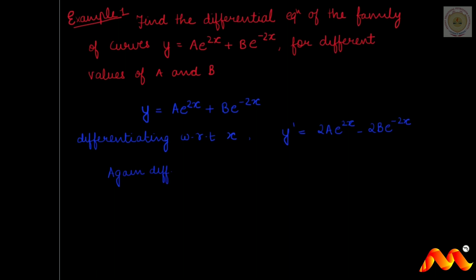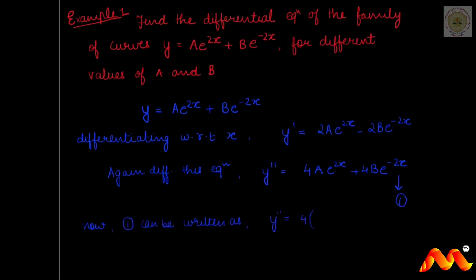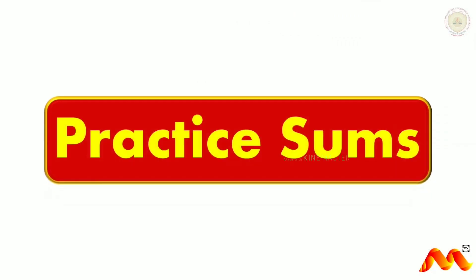Differentiating again with respect to x: y'' = 4a·e^(2x) + 4b·e^(−2x). This gives y'' = 4(a·e^(2x) + b·e^(−2x)). Comparing with equation 1, we get y'' = 4y, which is the required differential equation.